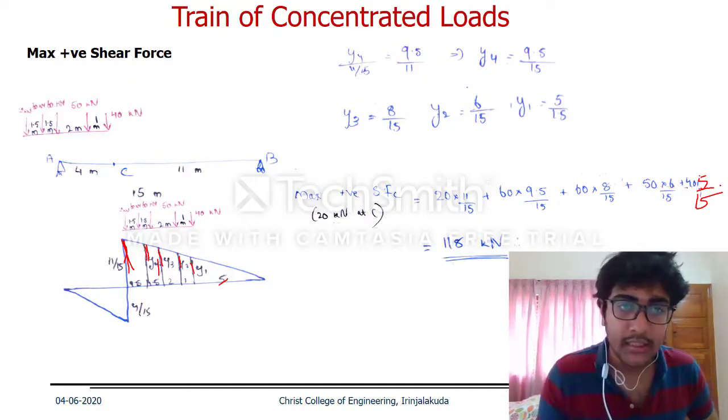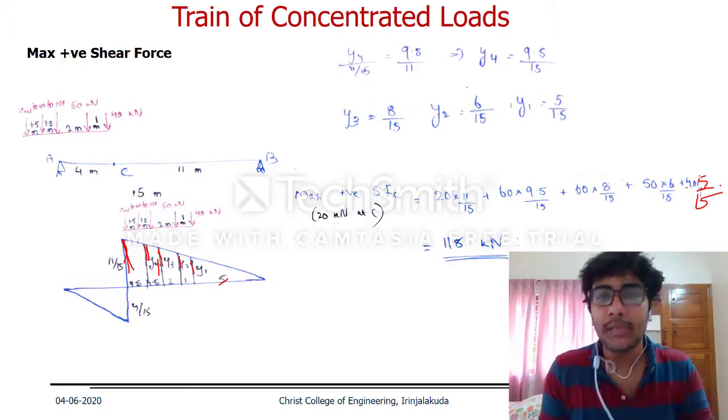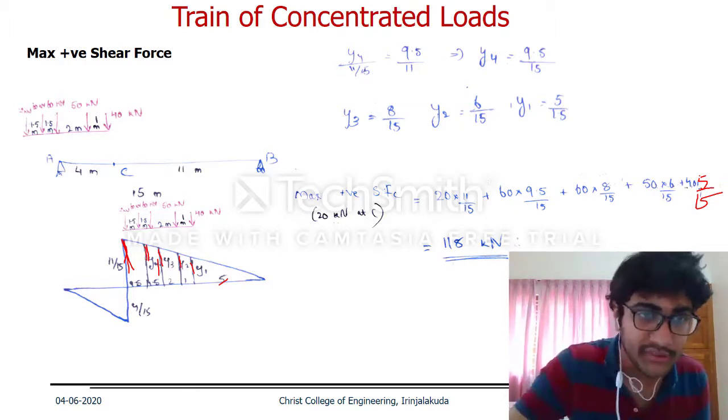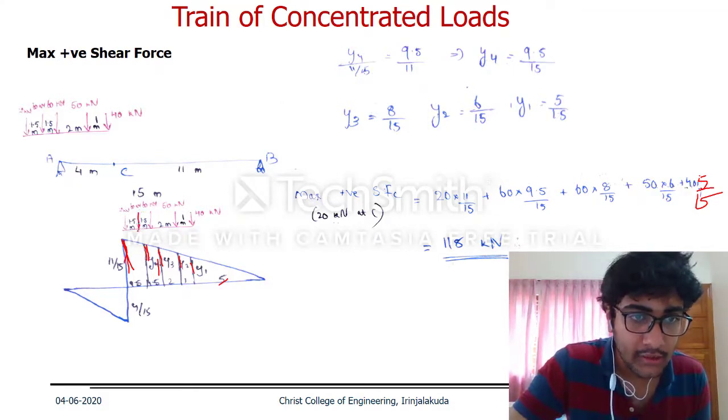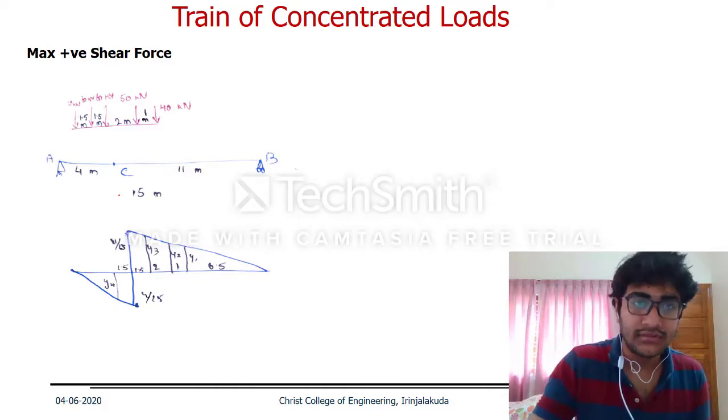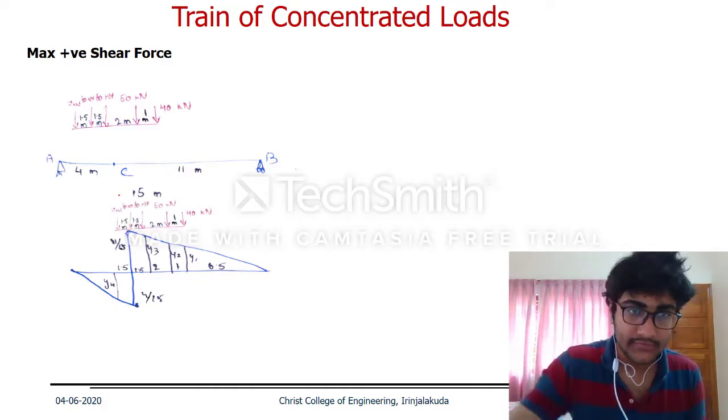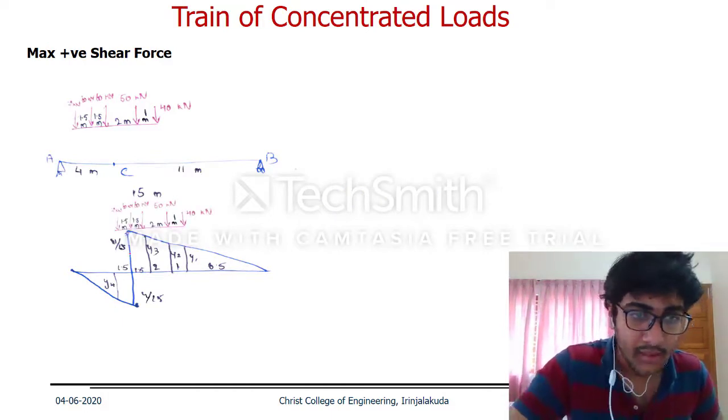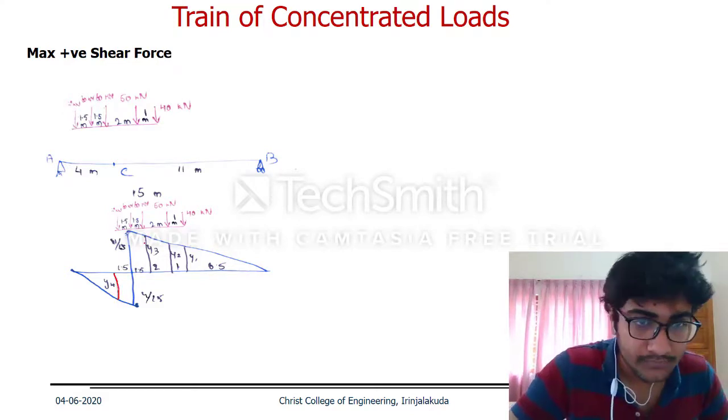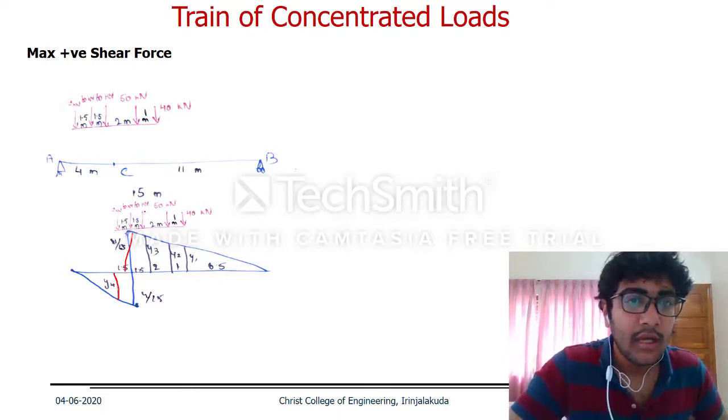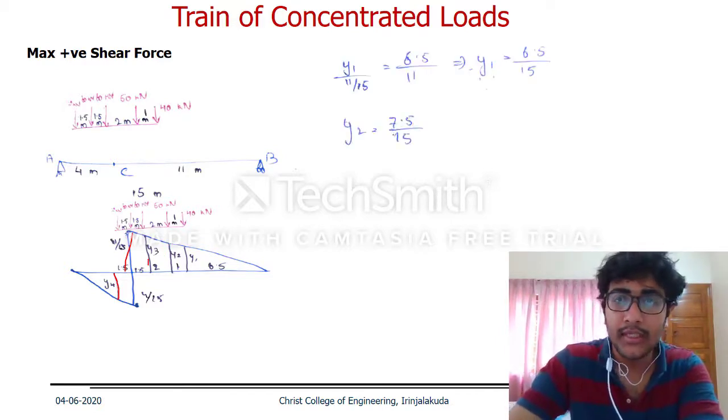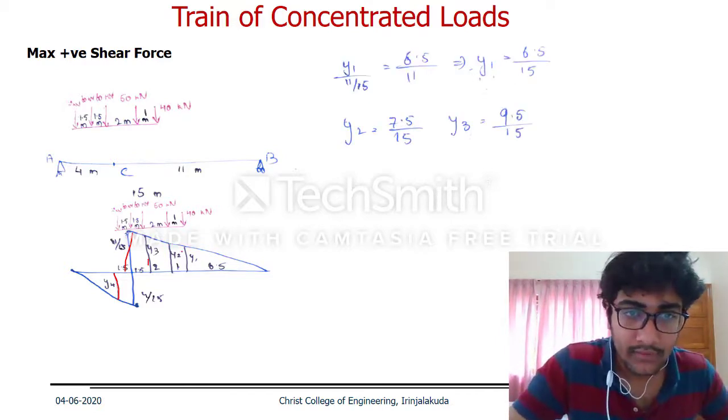If you want to check this value using trial and error, consider the scenario where the 60 kN load is placed at the section. The trailing load of 120 kN is now in the negative portion with a negative ordinate. The 60 kN load has ordinate 11/15.